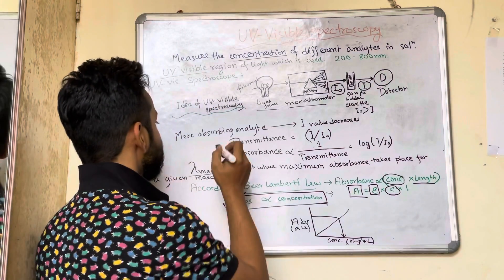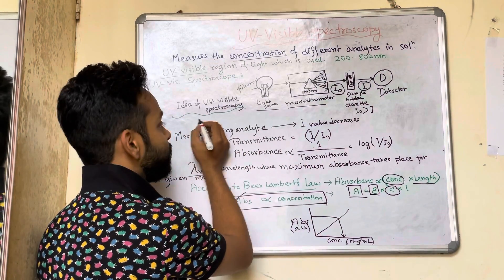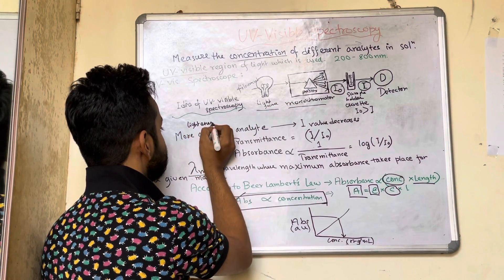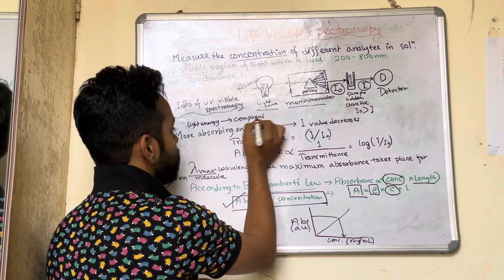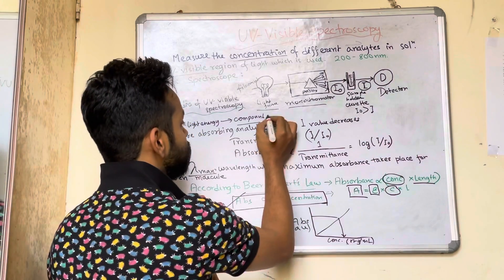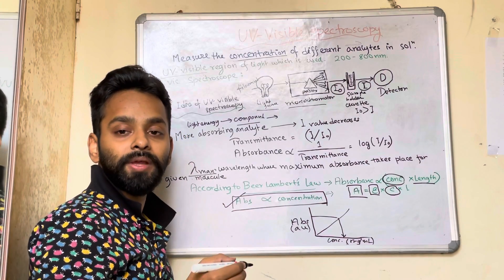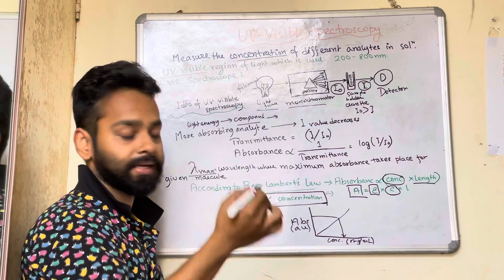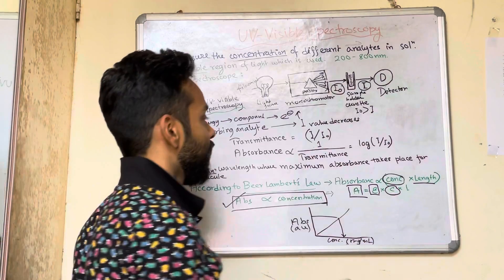When light energy in the UV-visible region hits a sample containing analytes with absorbing species, the compounds absorb that part of the energy. The electrons absorb that energy and transition from a lower energy level to a higher energy level — an electronic transition from a lower to a higher energy level.